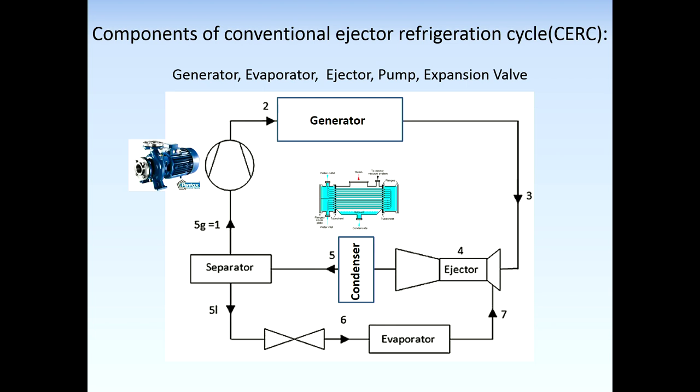The ejector is the heart of the system and is a substitution for mechanical compressors in compression refrigeration systems. It has two essential tasks: first, making the vacuum and discharging the fluids, and second, mixing the fluids. It is a simple model of a vacuum pump or compressor without moving parts; it uses the kinetic energy of a high pressure fluid.